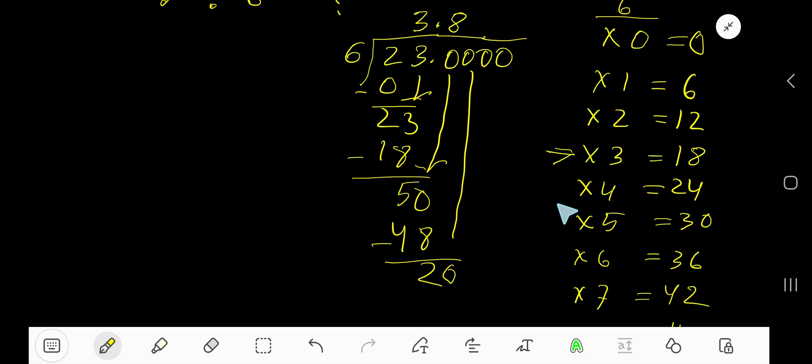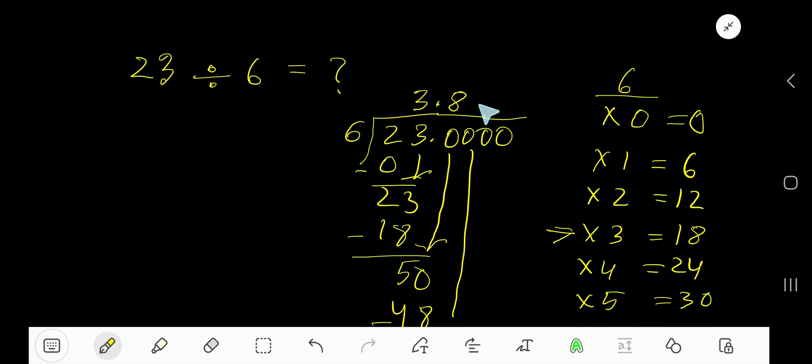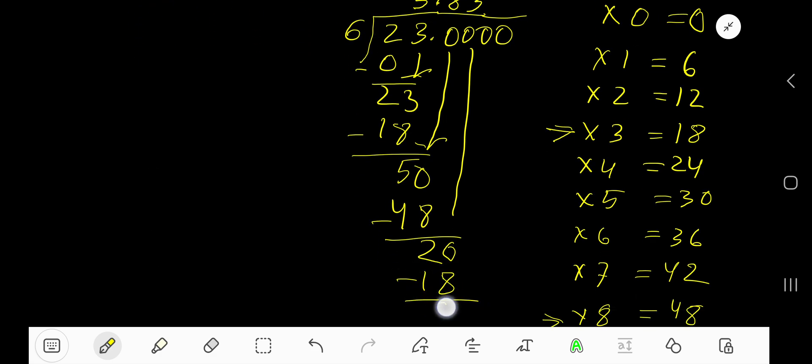6 goes into 20 how many times? 4 times is 24, which is greater, so 3 times. Write 3. 3 times 6 is 18. Subtract to get 2, bring down the next 0. So 20 again.